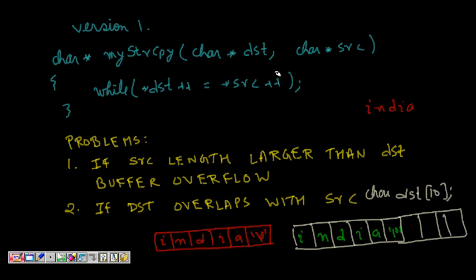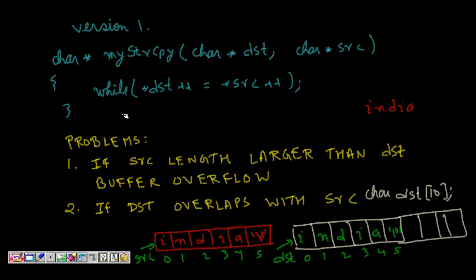For version one, we write: char* my_strcpy(char* destination, char* source). So dst starts at index zero and src starts at index zero. What we do is: while (*dst++ = *src++), we continue. This is a very precise way of writing the assignment. dst is a char pointer pointing to destination, and *dst means the value at position zero of dst, which is assigned the value of *src — so 'I' is copied from src[0] to dst[0]. Then the pointer is incremented.